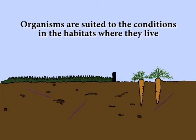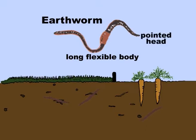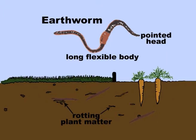Organisms are suited to the conditions and the habitats where they live. For example, an earthworm has a long, flexible body and a pointed head so it can burrow through the soil in search of the rotting plant matter it eats.